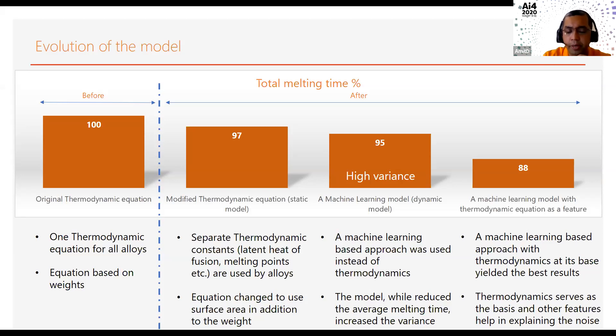The next step was to build a fully machine learning-based model. What we saw is with that particular approach, we were able to, on average, cut down the melting time by 5% from the baseline. But there was a very high variance, which was not acceptable from a planning perspective. Finally, as our last iteration, we took the thermodynamic equation that we had modified as our base and built a machine learning model on top of that. That helped us to get the best performance, which helped us to cut down our melting time by 12%.